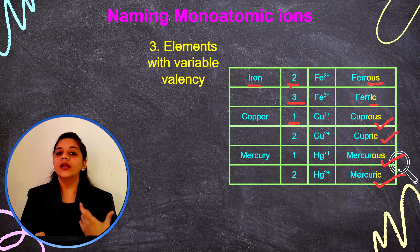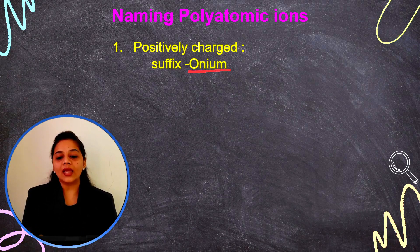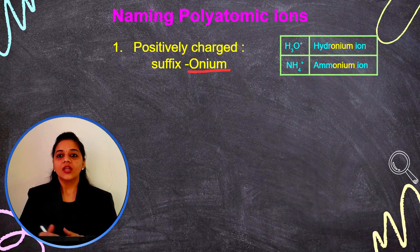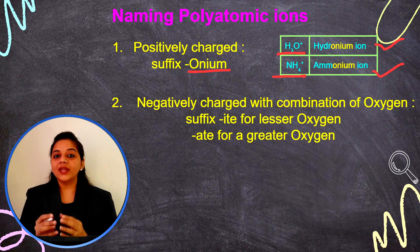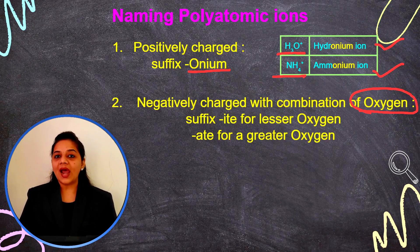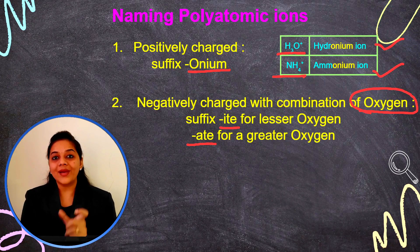Now let's move on to the naming of polyatomic ions. If the polyatomic ion is positively charged, we add the suffix '-onium' — for example, hydronium ion and ammonium ion. For negatively charged polyatomic ions that contain only oxygen, we add the suffix '-ite' when there are fewer oxygen atoms, and '-ate' when there are more oxygen atoms present in the ion.